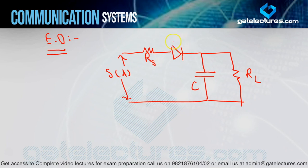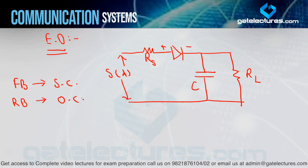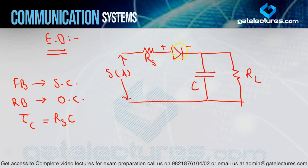Now let's see the rules of the circuit. When the diode is forward biased, it will be a short circuit, and when the diode is reverse biased, it will be an open circuit. This is our ideal conclusion for the diode. When the diode is short circuit, the capacitor will get direct supply from the input and will get charged via RS. So the charging time constant will be RS into C.